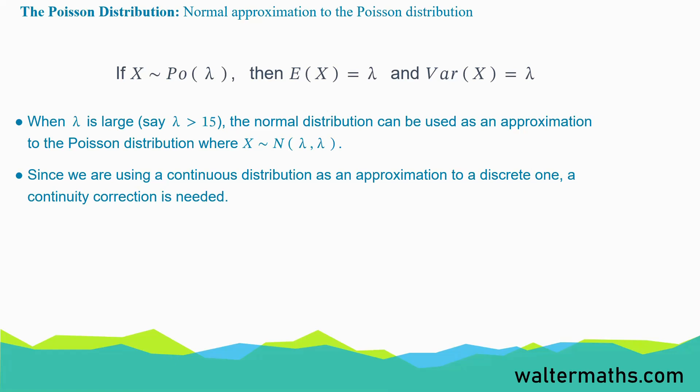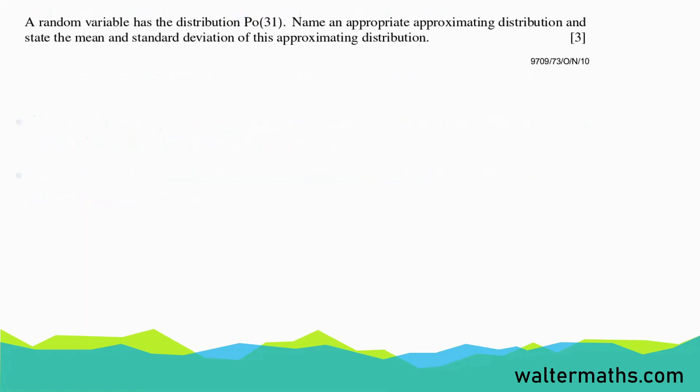Let's look at a couple of examples to demonstrate how we can use the normal approximation to the Poisson distribution. The first question says: a random variable has the distribution Poisson of mean 31. Name an appropriate approximating distribution and state the mean and standard deviation of this approximating distribution.